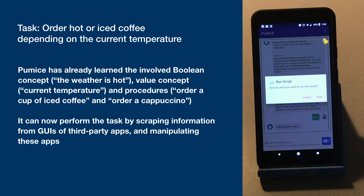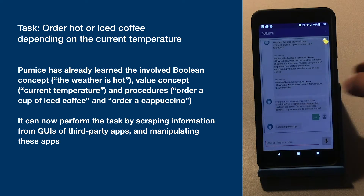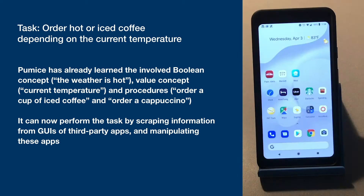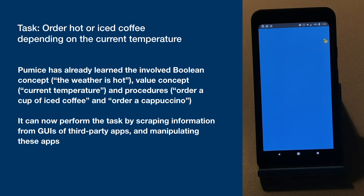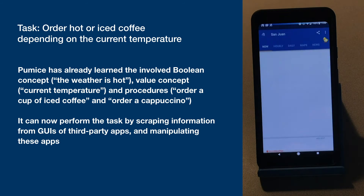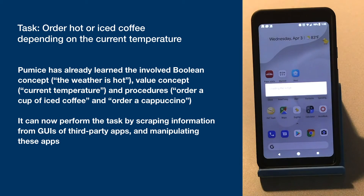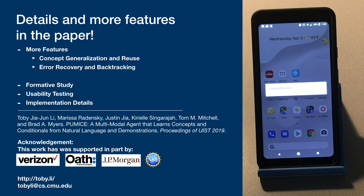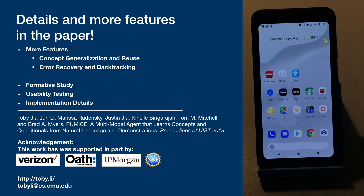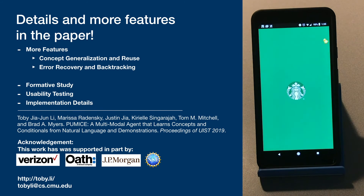Executing the script. The value of current temperature is 86 degrees. The condition 'the weather is hot' is true. Executing the procedure: order an iced coffee.